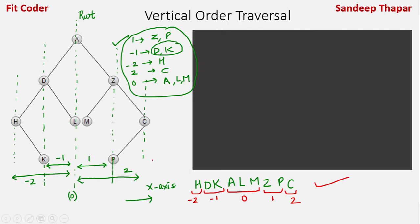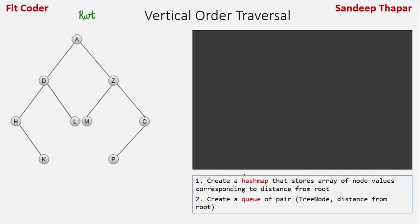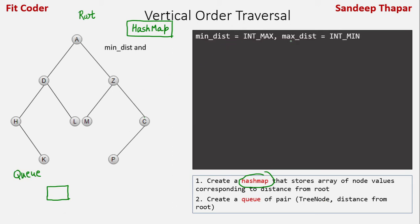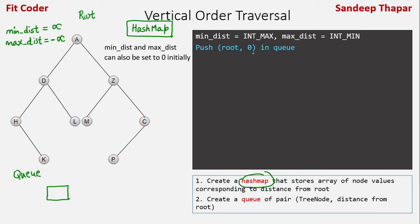Now let's look at the pseudocode. In the first step, we create a hash map that stores an array of node values corresponding to their distance from the root. Then we create a queue of pairs: tree node and the distance from the root. We also create two variables, minimum distance and maximum distance, initialized to minus infinity and plus infinity respectively. Then we push root comma 0 — so node A comma 0 — into the queue.